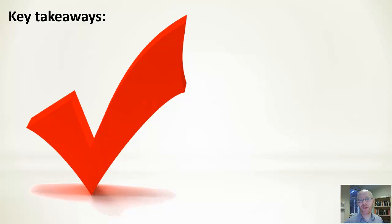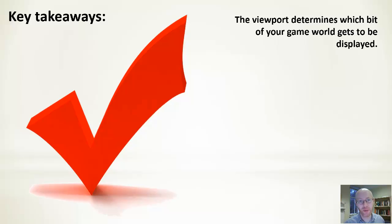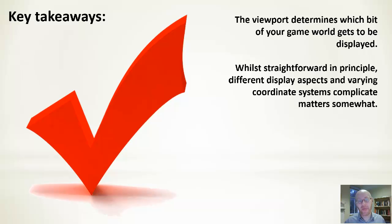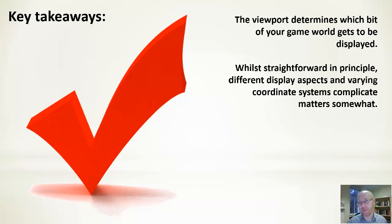Key takeaways: the viewport is the thing that determines which bit of your world gets displayed - simple in principle. There are a few complications: for example, in Android rectangles the top coordinate is less than or equal to the bottom, and we have to convert from game-world coordinates into bitmap coordinates into screen coordinates, doing a little bit of mathematical manipulation from one coordinate space into another. But it adds up in terms of complexity and is very useful when you have a world bigger than the screen and only want to see a particular part of it.